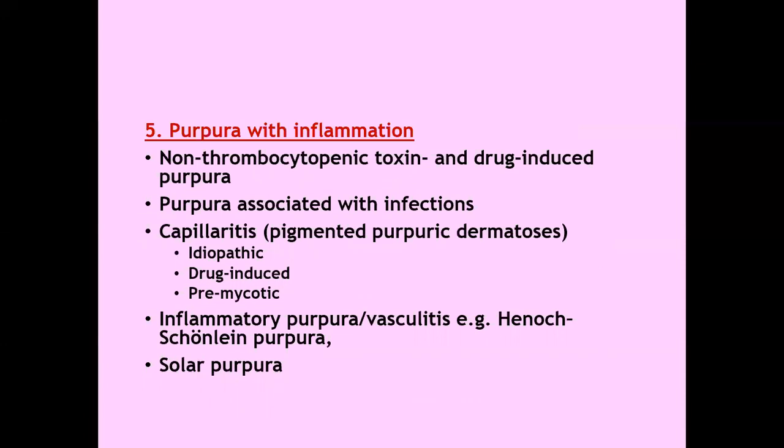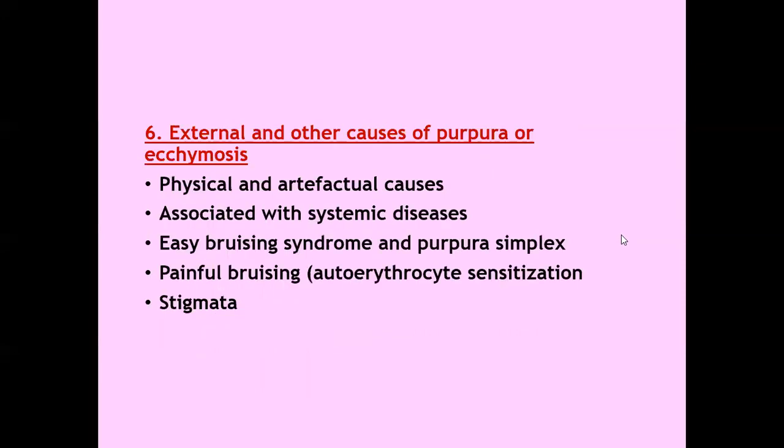Purpura with inflammation includes non-thrombocytopenic toxin or drug-induced purpura, purpura associated with infections, and capillaritis or pigmented purpuric dermatosis which can be idiopathic, drug-induced, or pre-mycotic. Inflammatory purpuric vasculitis includes Henoch-Schönlein purpura and solar purpura. External and other causes include physical and artifactual causes, easy bruising syndrome and purpura simplex, painful bruising syndrome like auto-erythrocyte sensitization, and stigmata.